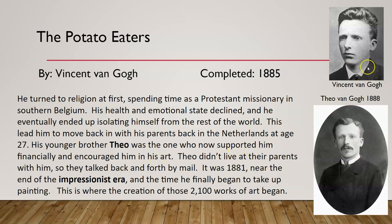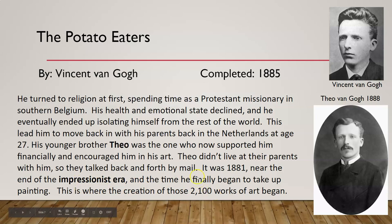Here's a picture of both of them at different times — here's Theo as a bit older, and here's a younger Vincent van Gogh. Theo didn't live with their parents, so they ended up having to communicate by mail. It was 1881, near the end of the Impressionist era, and the time he finally began to take up painting. This is where the creation of those 2,100 works of art began.